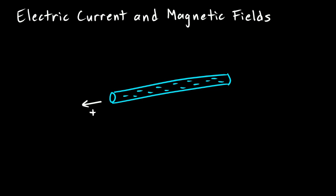We said earlier that the symbol for current is I. So I'll write I here for electrical current and we'll imagine positive current flowing in this direction. When we figure out the shape of the magnetic field around the wire, we think of it as the positive current flow and we use what's called the right-hand rule.